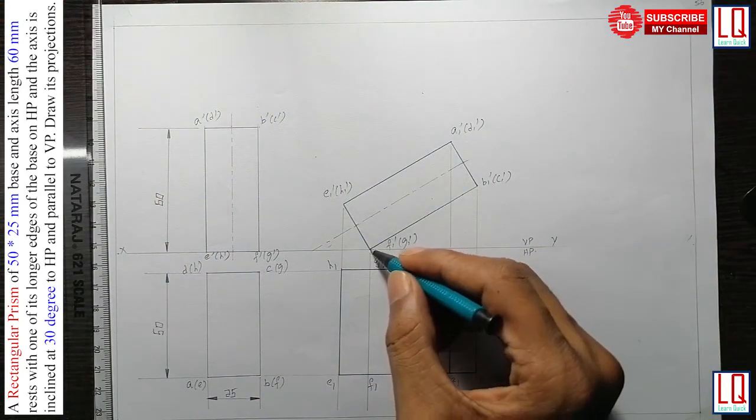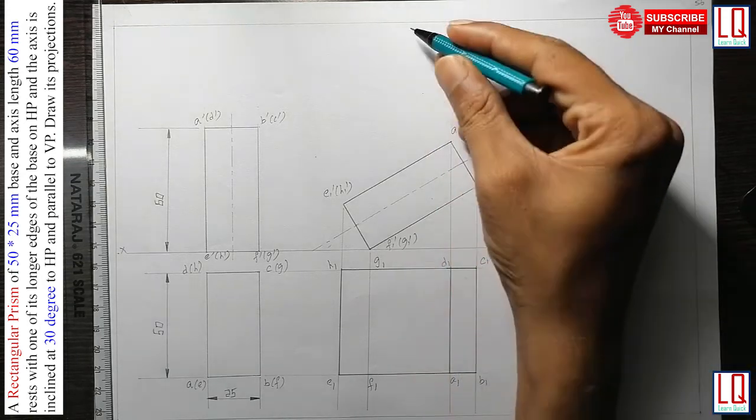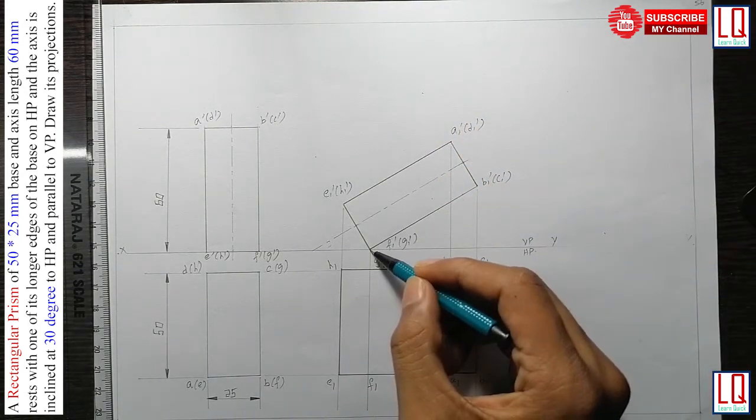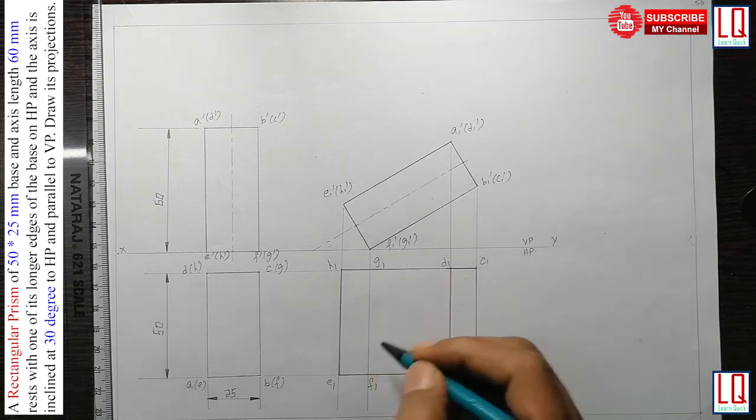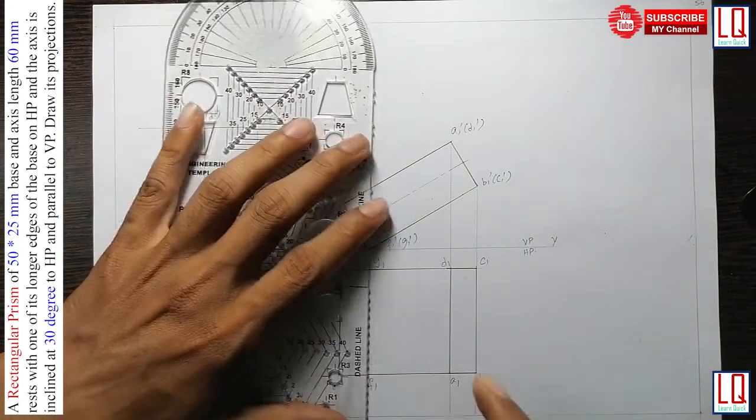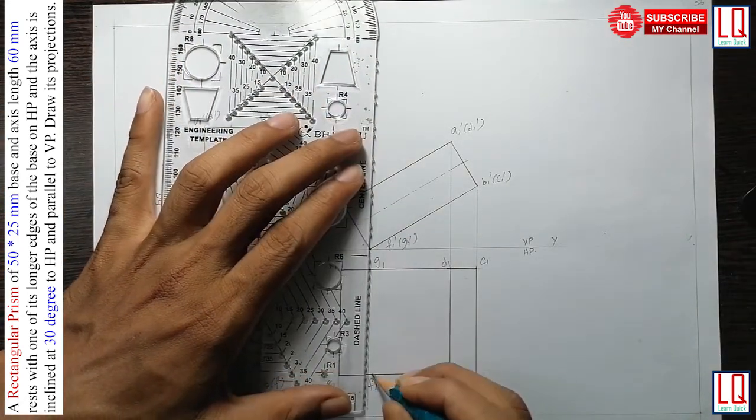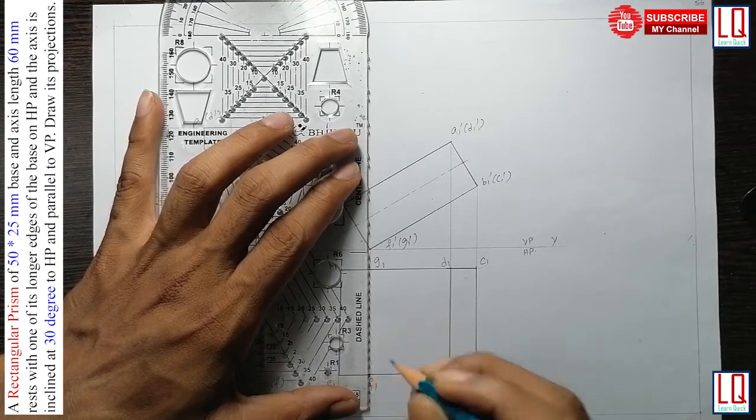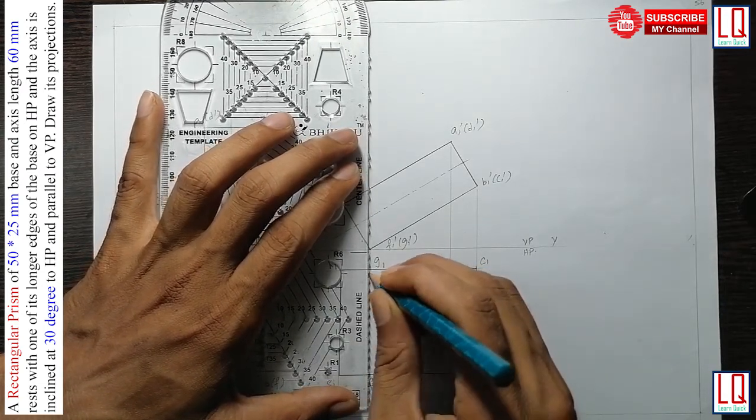So only the resting edge, F dash and G1 dash, when you see from the top view, it will not be visible. So this F1, G1 has to be a hidden line. So we use our engineering template again to draw the hidden line, the dashed lines, which is not visible from the top view. Because this is the resting edge.